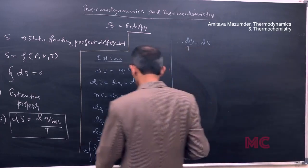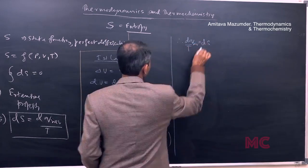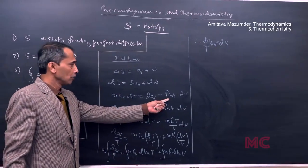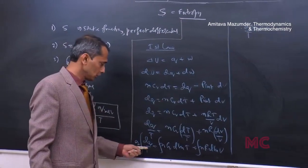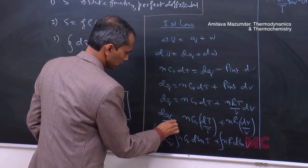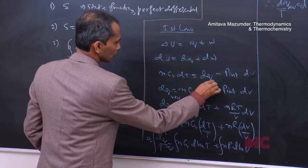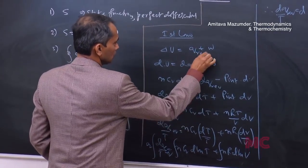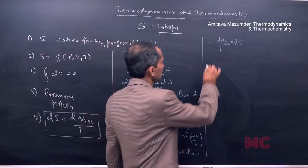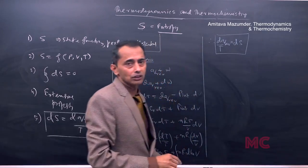So dS equals dQ reversible divided by T. Of course it is dQ reversible since we are talking about P_internal dV — the process is reversible. Therefore dQ reversible by T is basically dS, and that is the final form of dS.